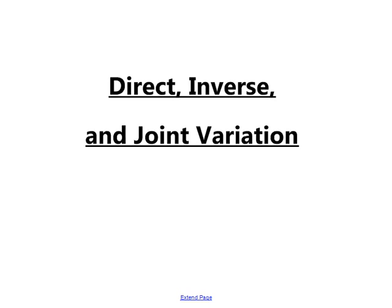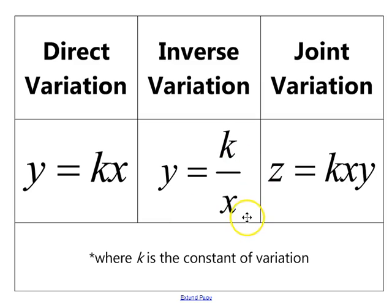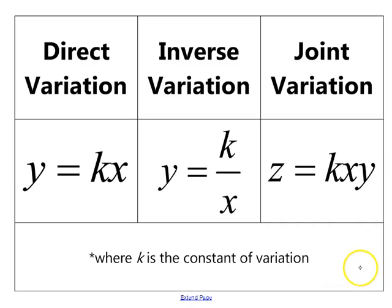Direct, inverse, and joint variation. Here we want to discuss the relationship that certain variables and values have with one another. There are three formulas that we need to remember. Direct variation: y equals kx. Inverse variation: y equals k divided by x. And joint variation: z equals kxy. In all three of these formulas, k is considered the constant of variation.